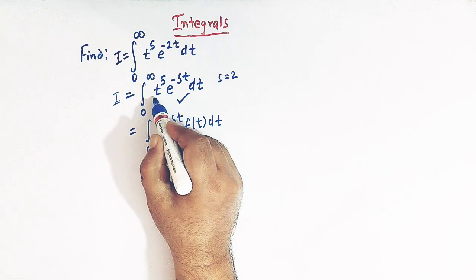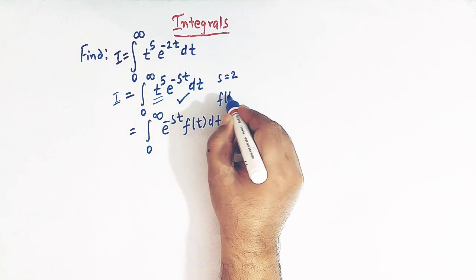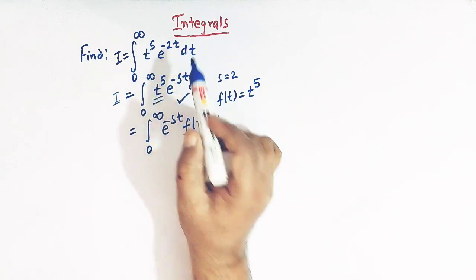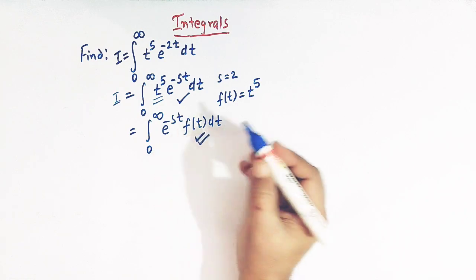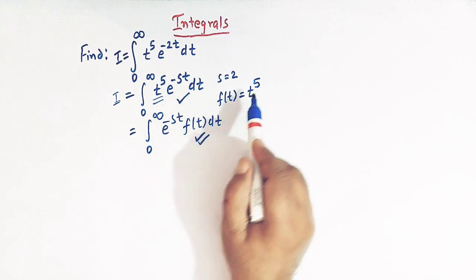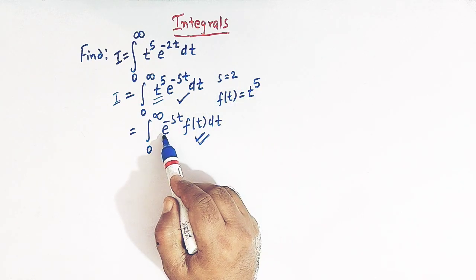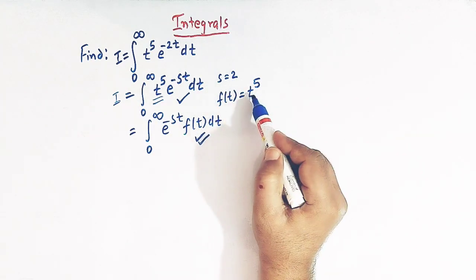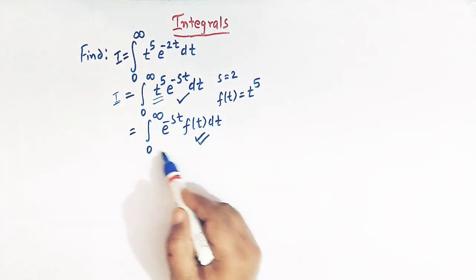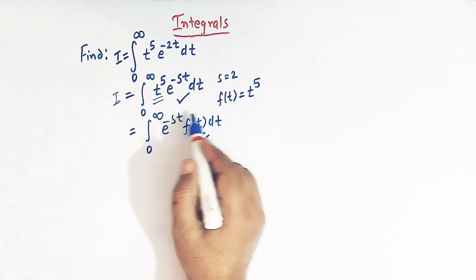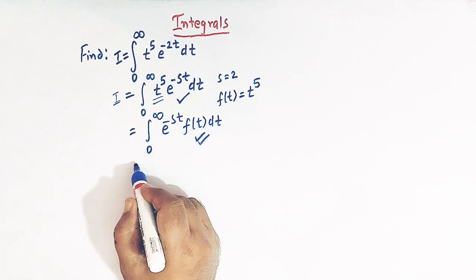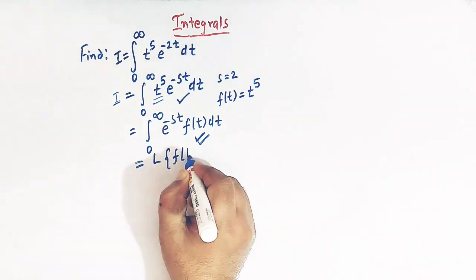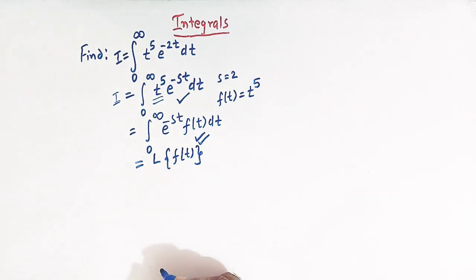We are writing f of t as t raised to 5. So now this integral is written in the form 0 to infinity of e raised to minus st times f of t, dt — because here f of t is t raised to 5 and we have e raised to minus st. And now we can see that this is nothing but the Laplace transform of f of t by the definition of a Laplace transform.